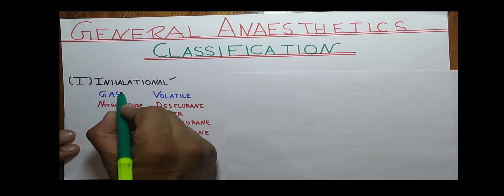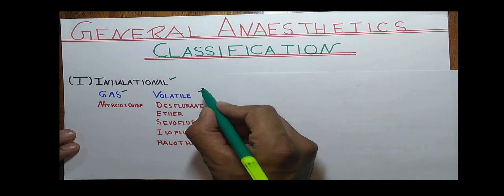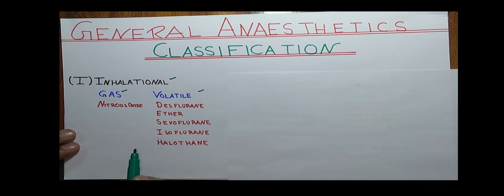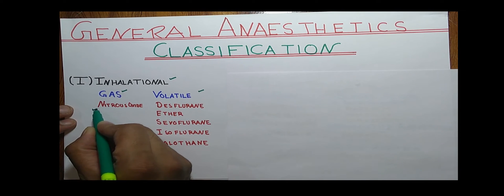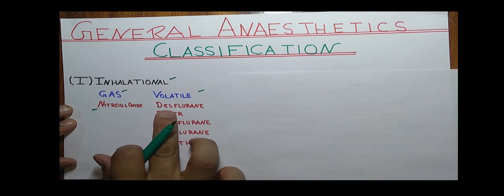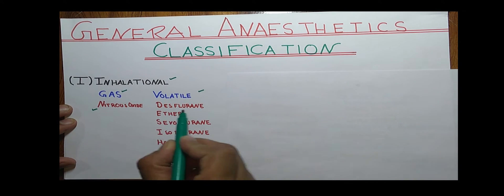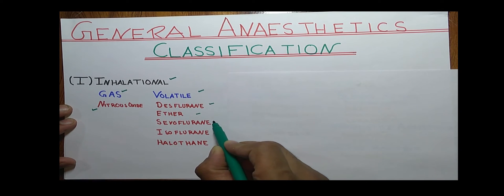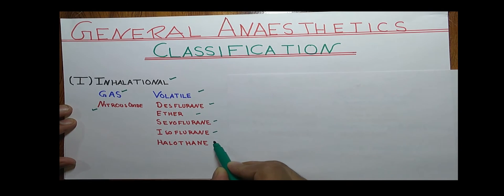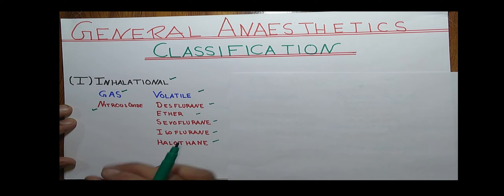Inhalational anesthetics are divided into gases or volatile liquids. There is a simple trick to learn this. In gas, there is only one agent, that is nitrous oxide. In terms of volatile liquids, there are five drugs: desflurane, ether, sevoflurane, isoflurane, and halothane.